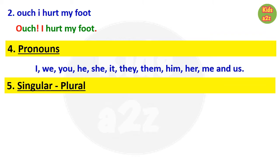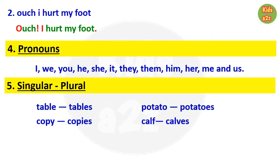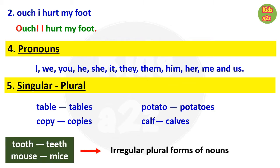The next topic is singular and plural. There is already a video on this topic with worksheets — the link will be in the description box, explaining all the rules to change singular nouns into plural nouns. Some nouns form their plurals differently and do not follow any rule — those are called irregular plural forms of nouns, like 'tooth/teeth' and 'mouse/mice.'